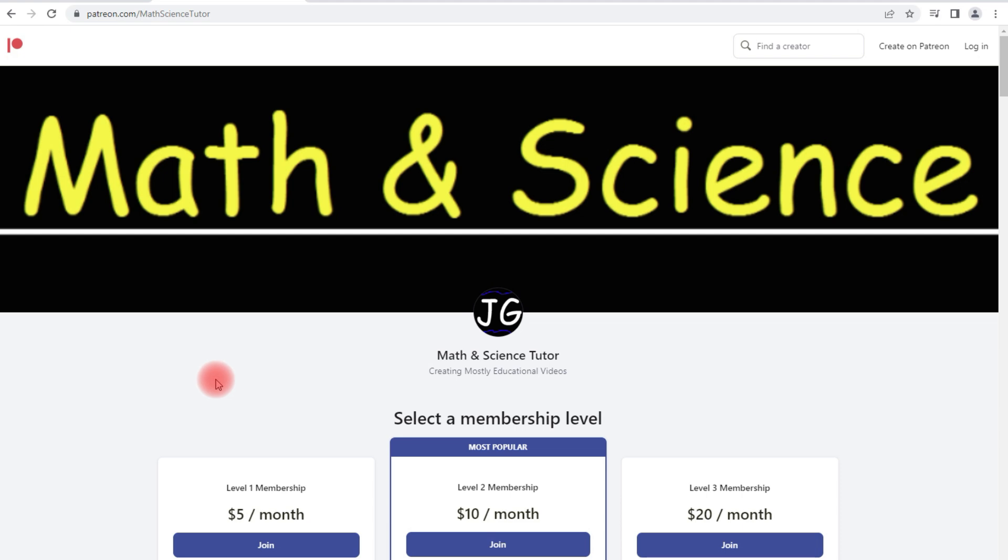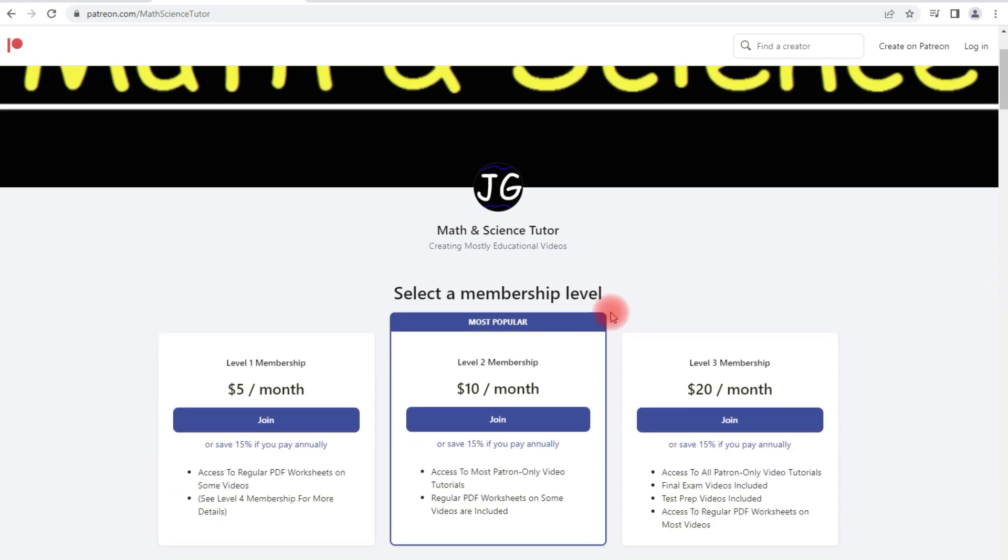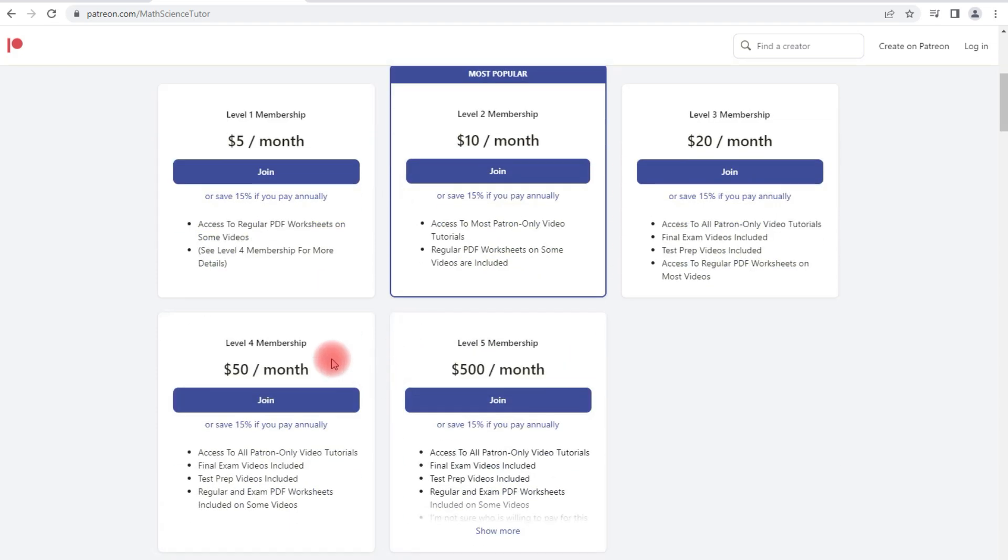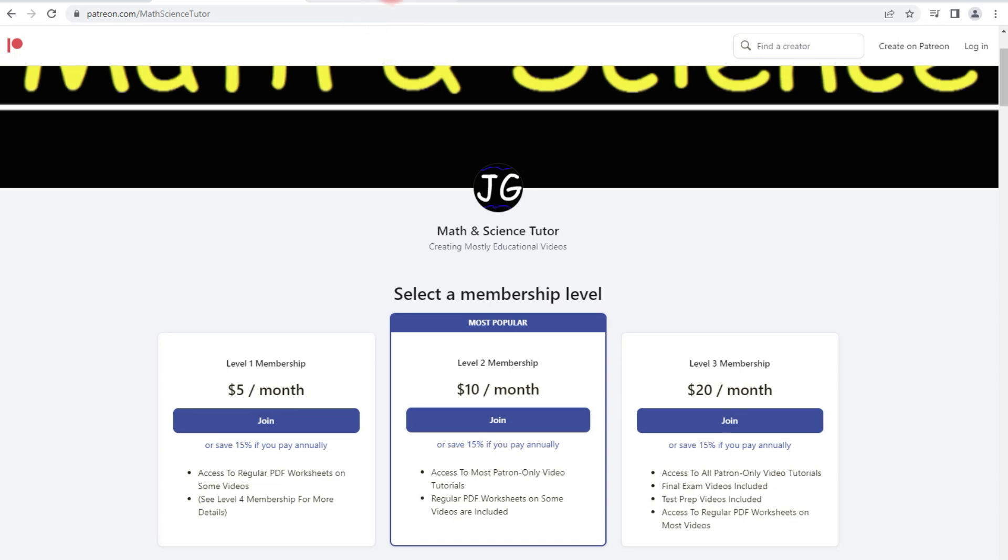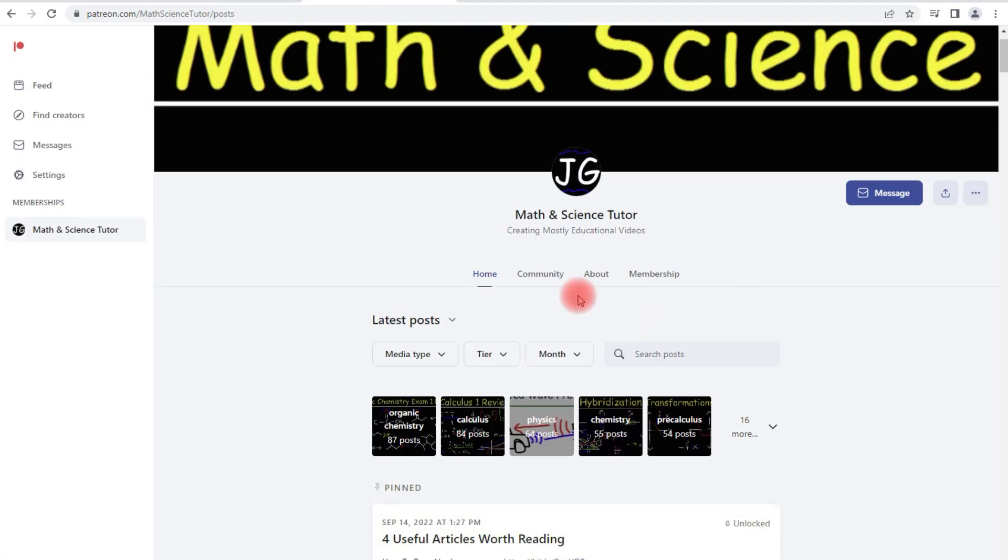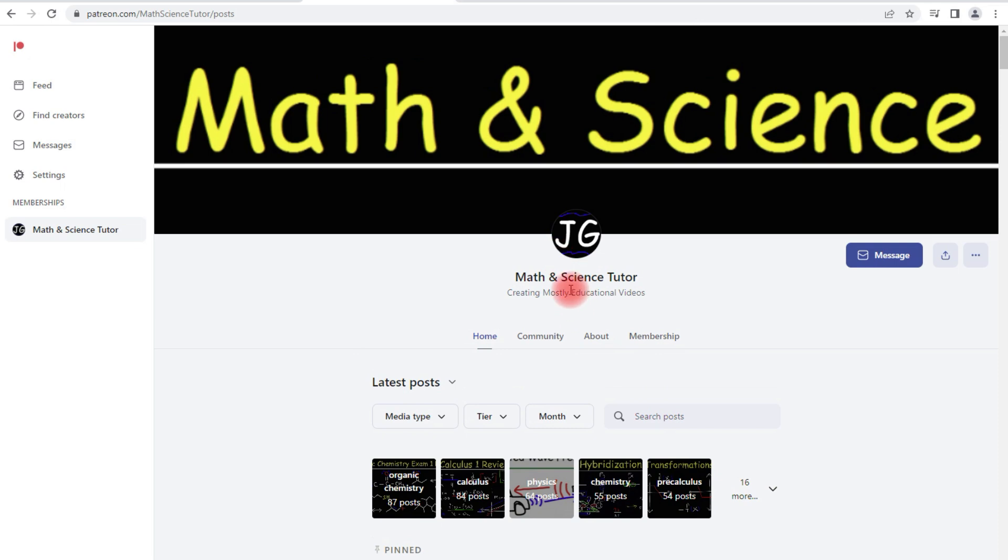For those of you who are interested in downloading that practice test, here's how you can do it. If you go to patreon.com slash mathssciencetutor, it'll take you to my Patreon membership page. To get this particular worksheet, you need the level 4 membership. This is where I have my worksheets for final exams and practice tests. Once you sign in, you'll see something that looks like this. And if you go to organic chemistry posts, you're going to get access to the extended versions of my organic chemistry videos.